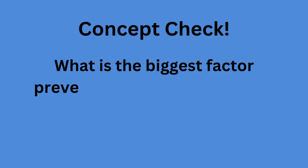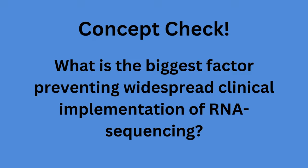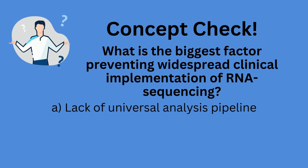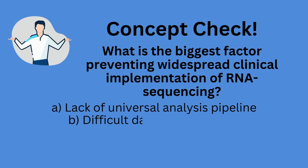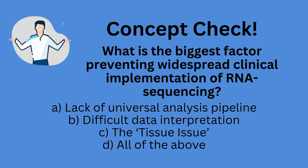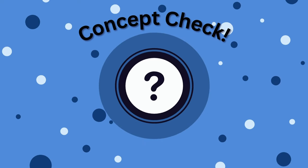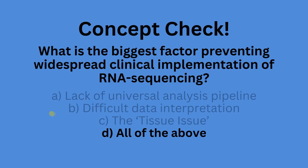Concept check: What is the biggest factor preventing widespread clinical implementation of RNA sequencing? A. Lack of universal analysis pipeline. B. Difficult data interpretation. C. The tissue issue. D. All of the above. Now take a moment to pause the video and answer this question. The answer is D — all of the above. Feel free to rewind this video and review this concept if you need to.